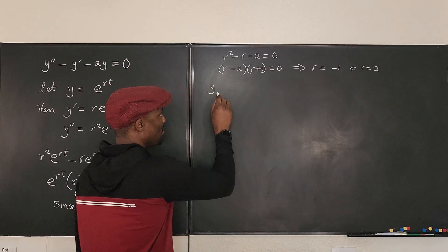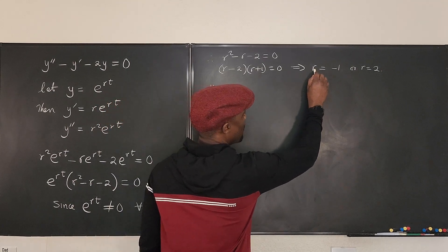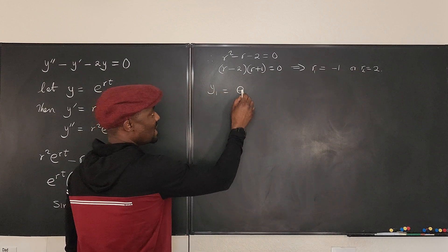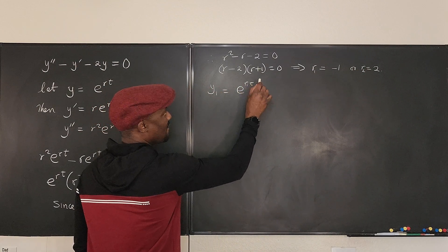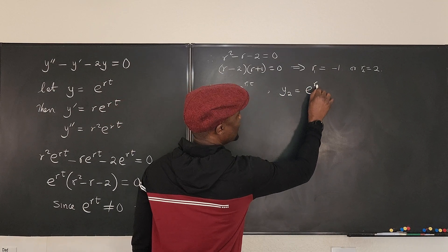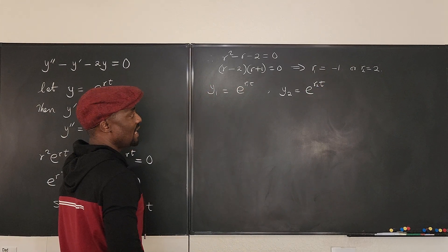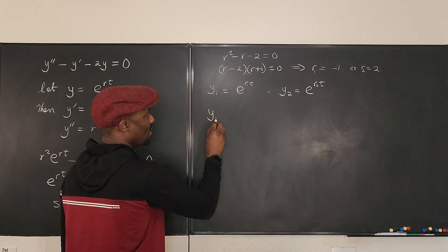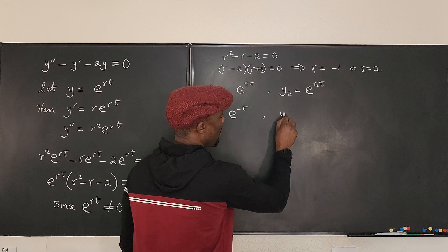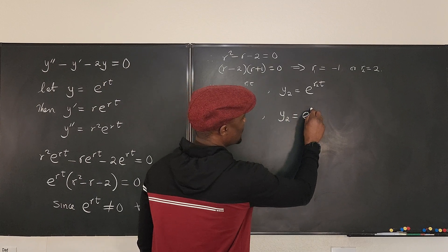So it means we can say that y, there are two y's. We can say y₁ will be equal to e^(r₁t), and then we have y₂ equals e^(r₂t). But we know what r₁ is, it's negative one, so we can say y₁ equals e^(-t), and then we can say that y₂ is equal to e^(2t).